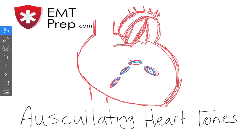So what's normal? S1 and S2 are the names given for normal heart tones, described as a lub-dub. The S1 lub sound is low-pitched and dull, and is auscultated during the contraction of the ventricles when the tricuspid and mitral valves are closing.